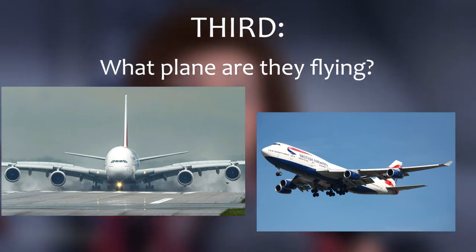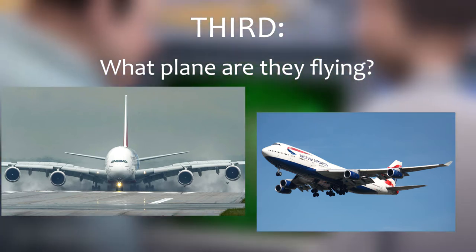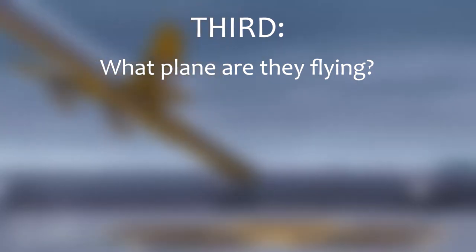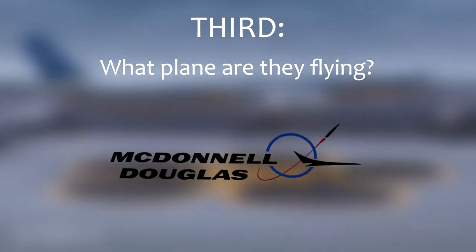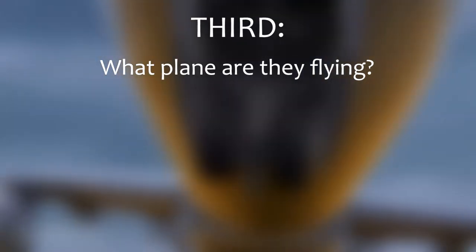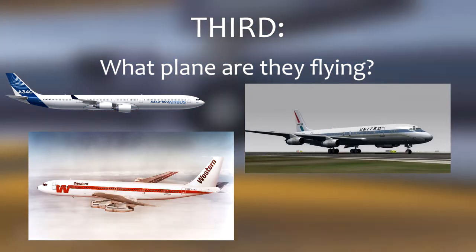But, as the Boeing 747 and Airbus A380 have partial or complete double decks, we can rule them out immediately. From this information, we can deduct that the plane is an older model, which means that McDonnell Douglas are in the running too. The three possible planes are the Airbus A340, the Douglas DC-8 and the Boeing 707.